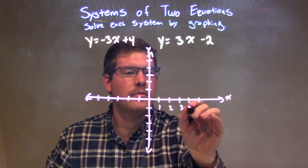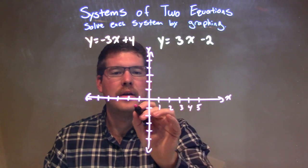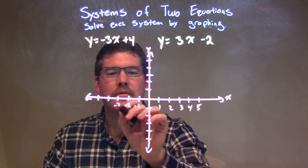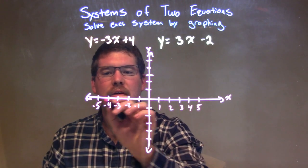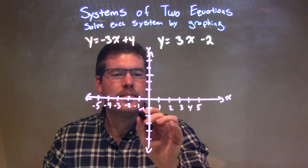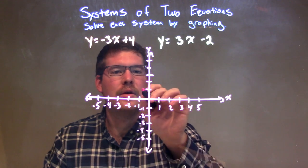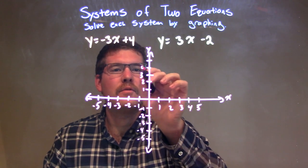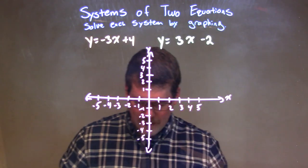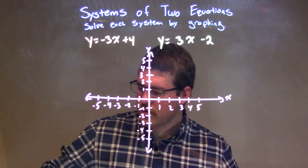So, we have 1, 2, 3, 4, 5. Negative 1, negative 2, negative 3, negative 4, negative 5. Negative 1 again here. Negative 2, negative 3, negative 4, negative 5. And then, 1, 2, 3, 4, and 5. Okay. So, let's go graphing this.